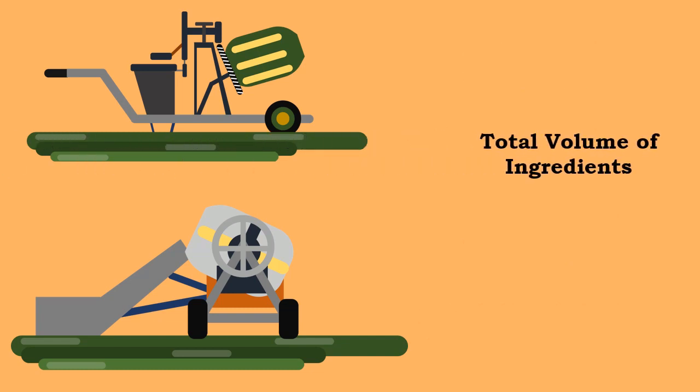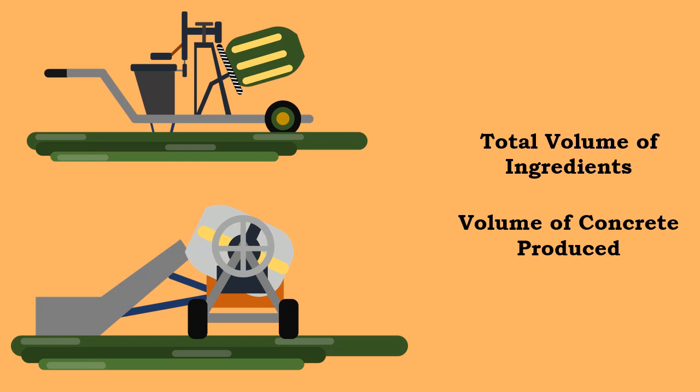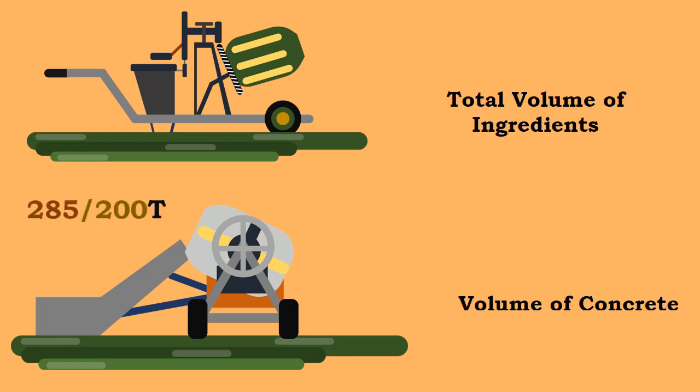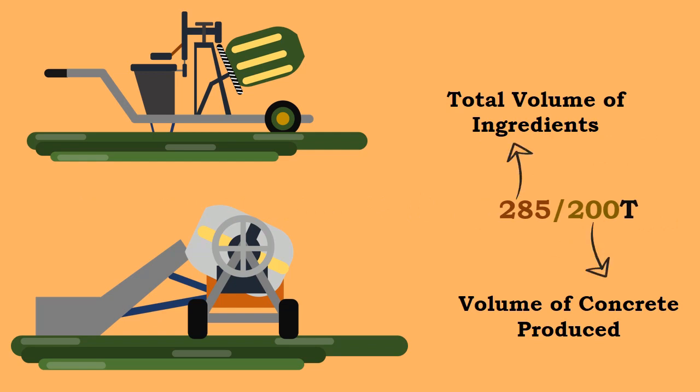The mixers are also sometimes specified by two quantities: the total volume of ingredients added and the volume of concrete produced. For instance, 285/200T represents 285 liters of ingredients and 200 liters of concrete produced.